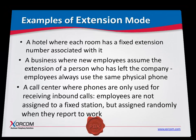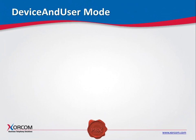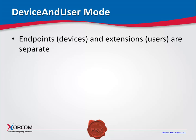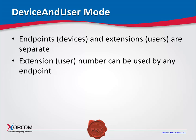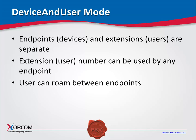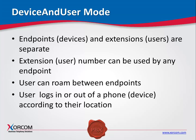The second option is device and user mode. In this mode, the endpoint device is not paired with a specific extension number. The actual extension number can be applied to any endpoint in the system. This allows the user to roam between endpoints, using the one that is most convenient at any given moment. The user logs in and out of the phone to activate and deactivate the relationship between the extension number and the device.